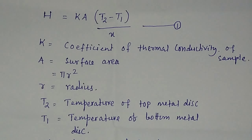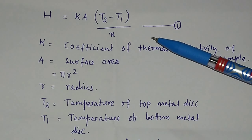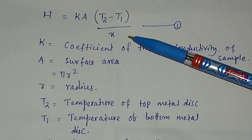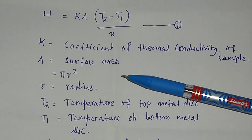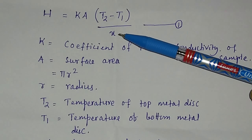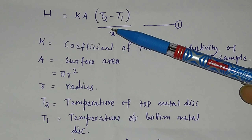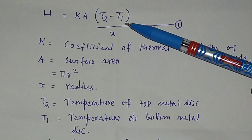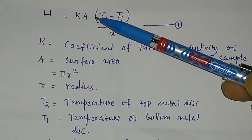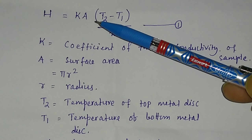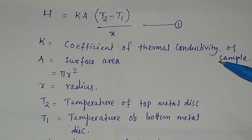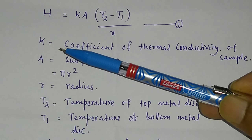The amount of heat flowing from the top metal disk to the bottom metal disk through the insulating material — here ebonite — is equal to H = KA(T2 − T1)/X, where T2 is the temperature of the top metal disk, T1 is the temperature of the bottom metal disk, A is the area of the insulating sample, and K is the coefficient of thermal conductivity of the sample.